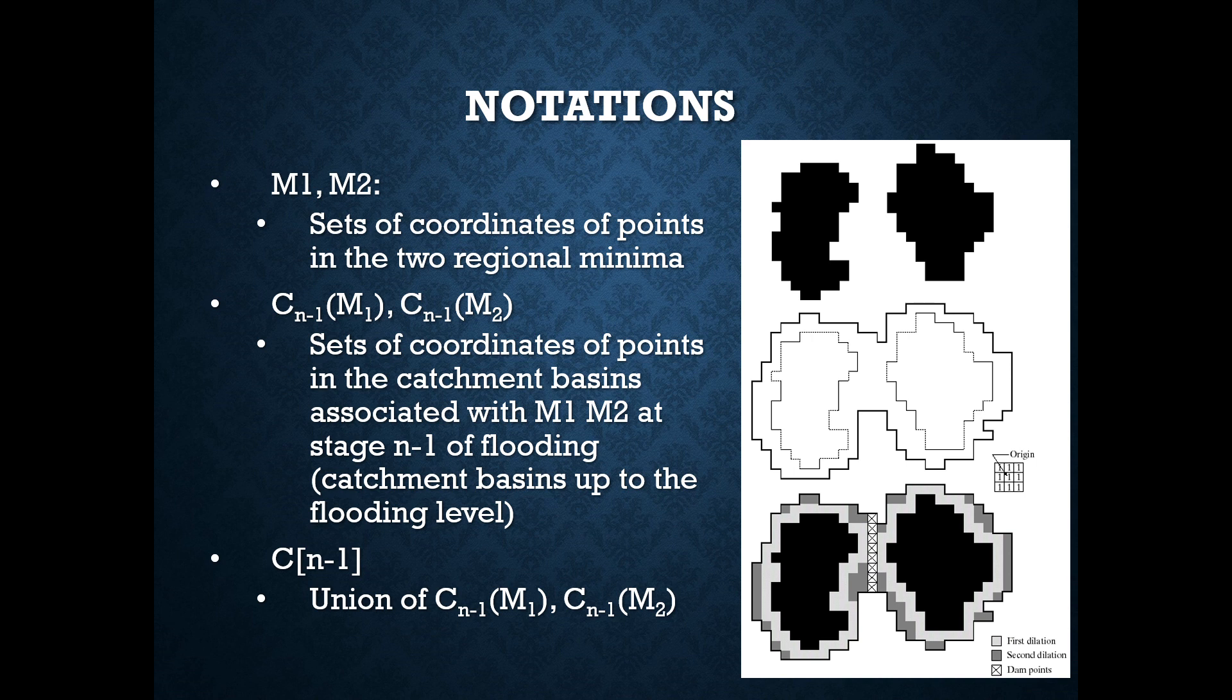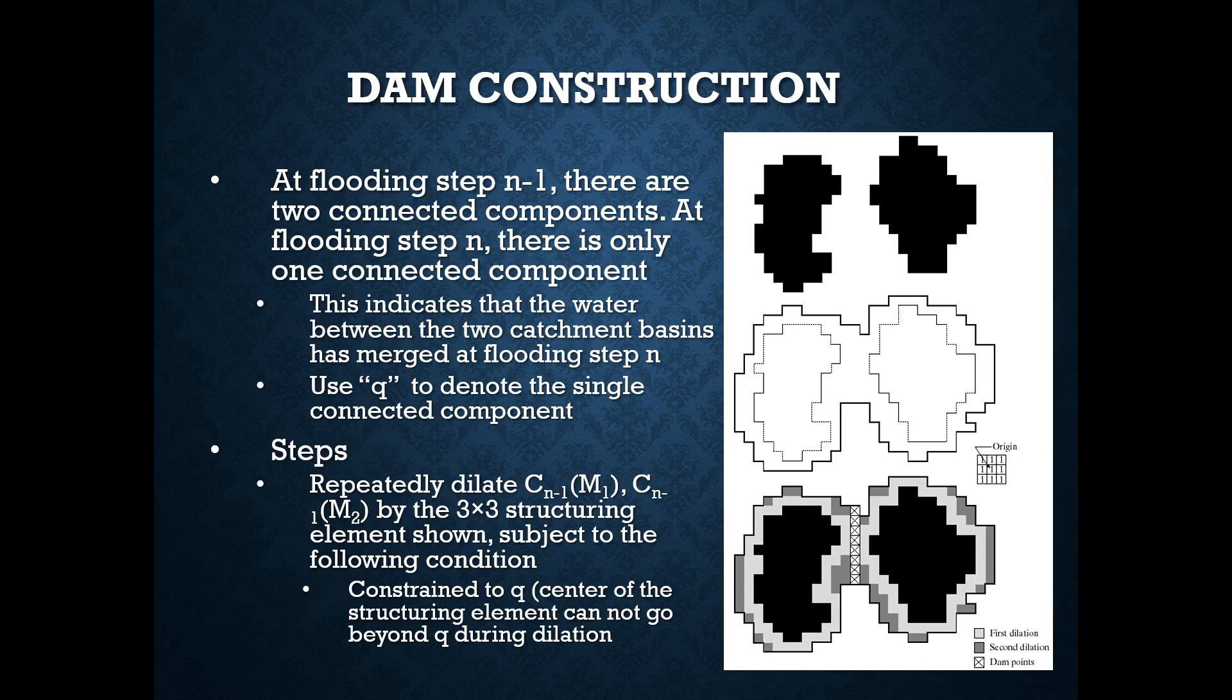C of M1 is the union of C of M1 and C of M2. At flooding step M-1, there are two connected components. At flooding step N, there is only one connected component. This indicates that the water between the two catchment basins has merged at flooding step N. We use Q to donate this single connected component.